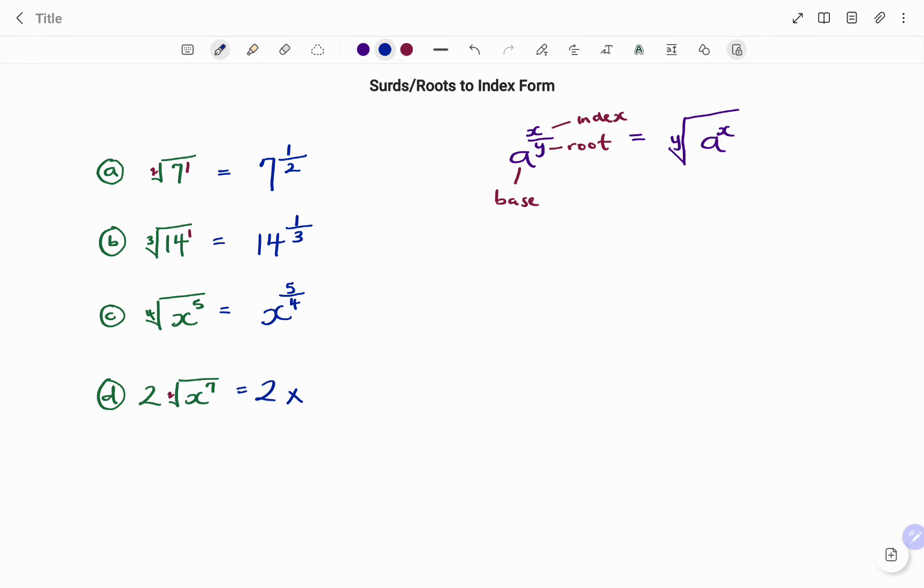I'm going to adjust that. I have two as the whole number multiplying my x to the power of my index, that's seven, divided by the root, that's two. And if I rewrite that, I have it as two x to the power of seven over two.